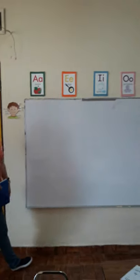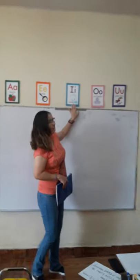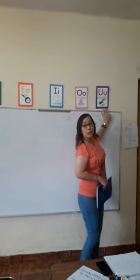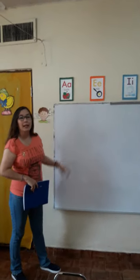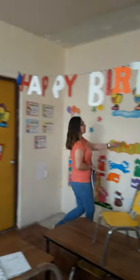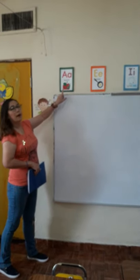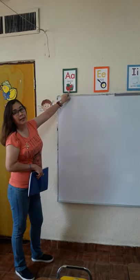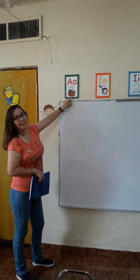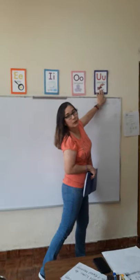Now here they are — the vowels. This is the letter A. E. I. O. U. And we are working with the letter A. A from Airplane. Airplane. A, E, I, O, U — all the vowels.